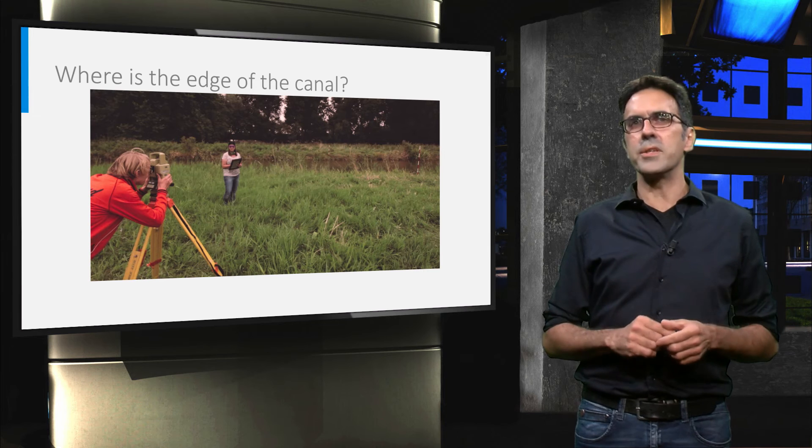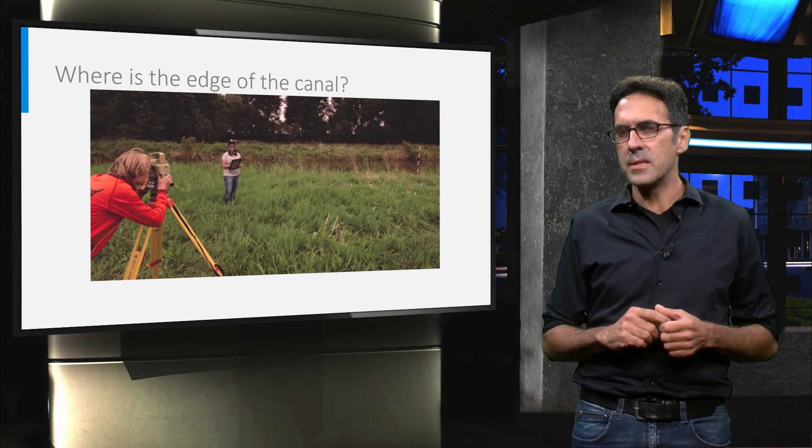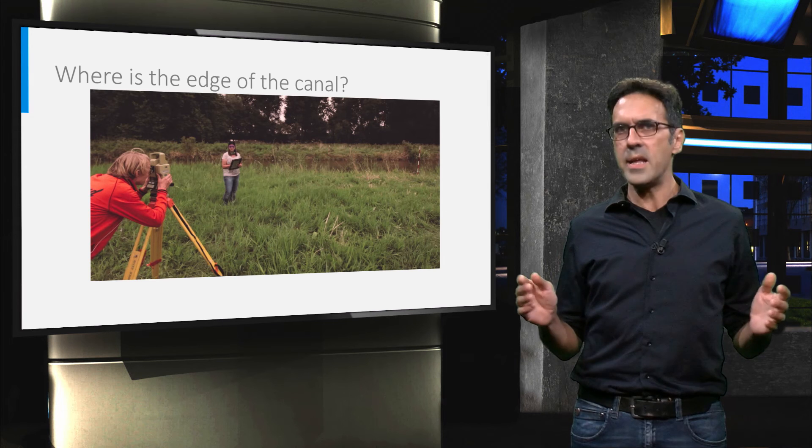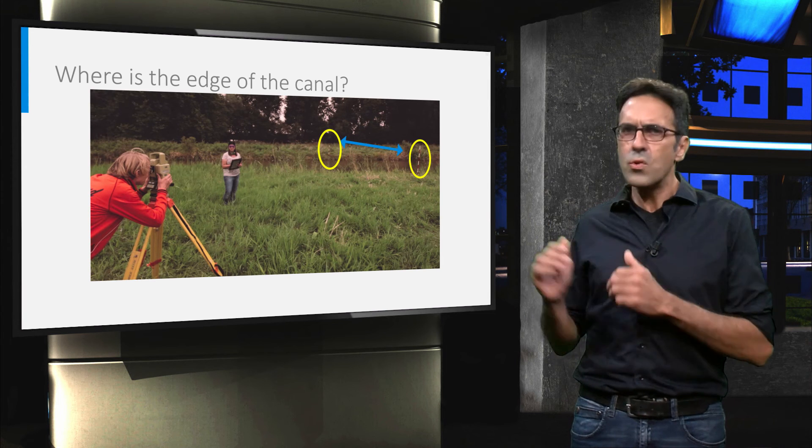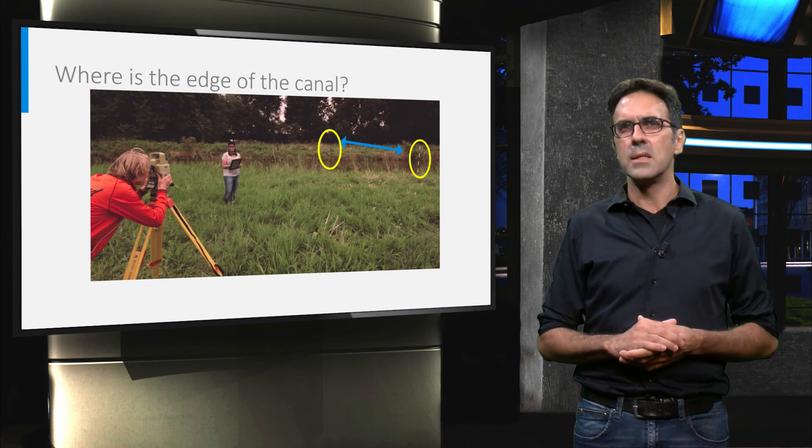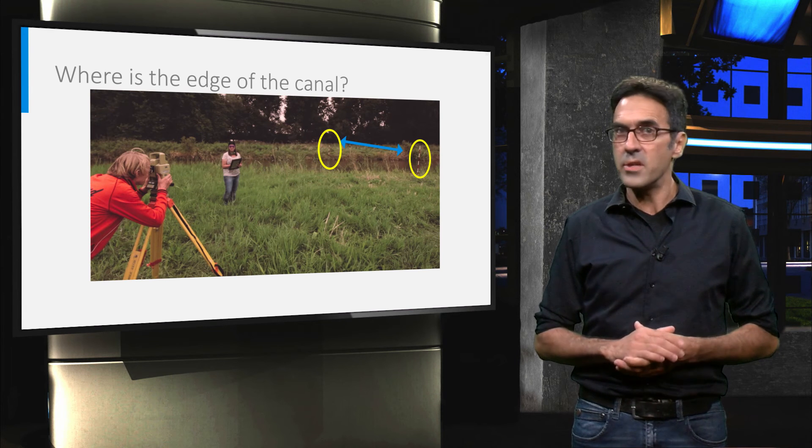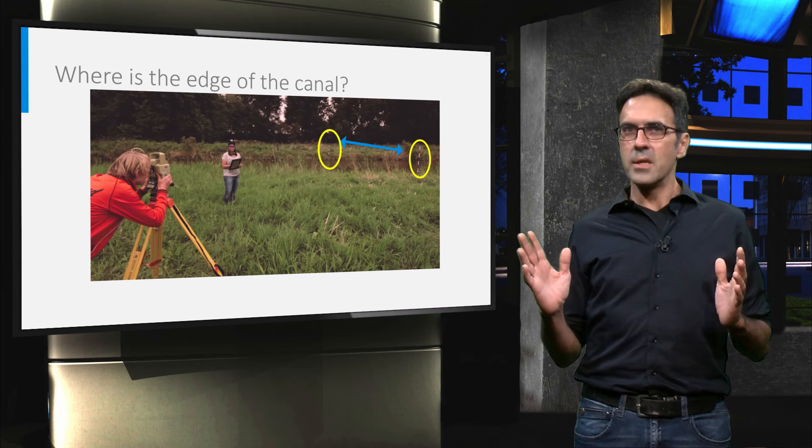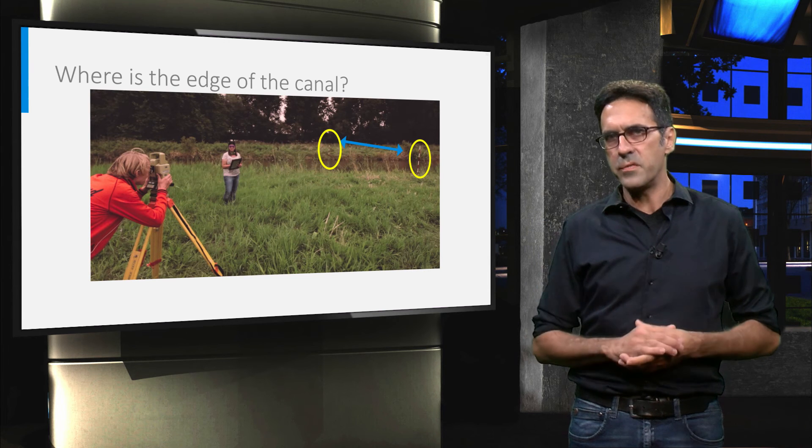This team uses expensive and precise equipment, but they represented the unknown width of the canal by the location of the two rods, which are not really at the edge of the water. Note that these rods are even not straight, so measuring between their tops can yield up to a decimeter of difference.